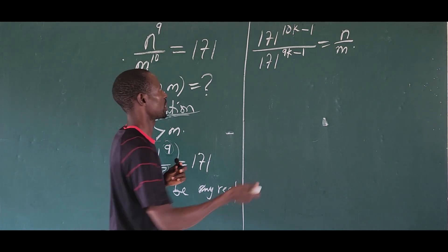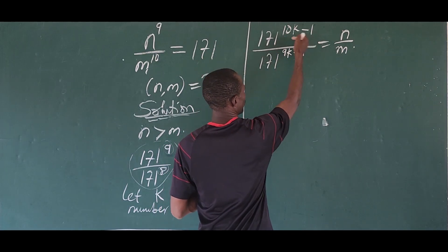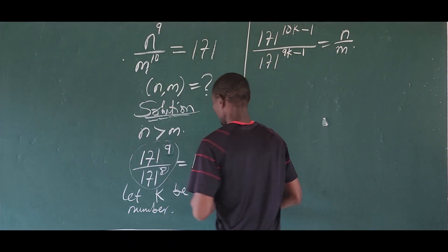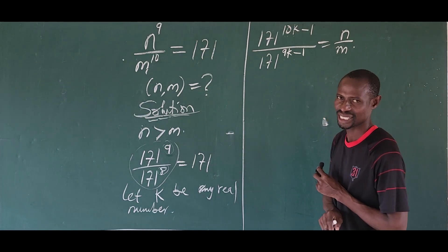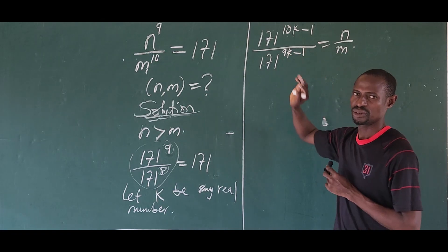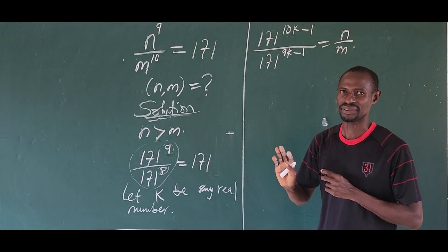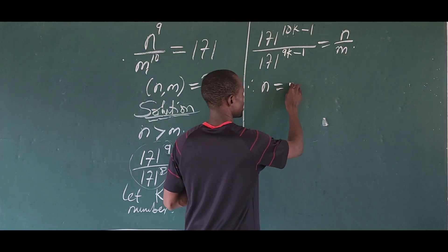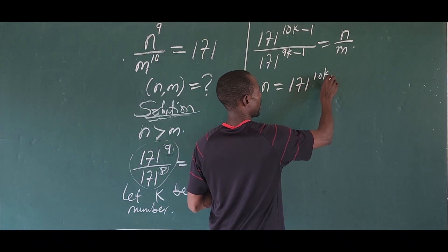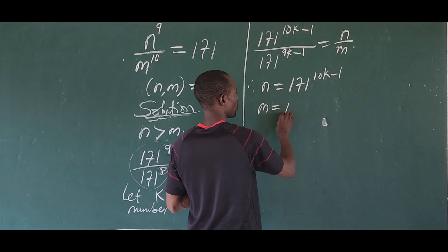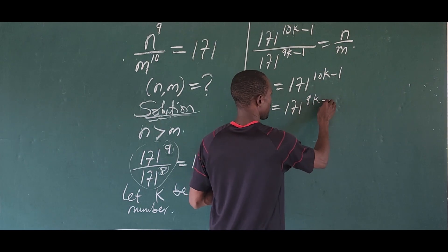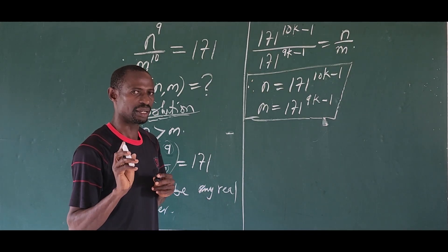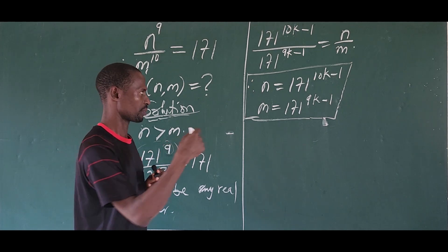So if K equals 1, the numerator exponent becomes 10 minus 1 equals 9, and the denominator exponent becomes 9 minus 1 equals 8. So we have 171 to the power of 9 over 171 to the power of 8, which gives us 171. Therefore, our general expression is n equals 171 to the power of 9K minus 1 over m equals 171 to the power of 9K minus 1. We keep this as one of the answers from Method 1.